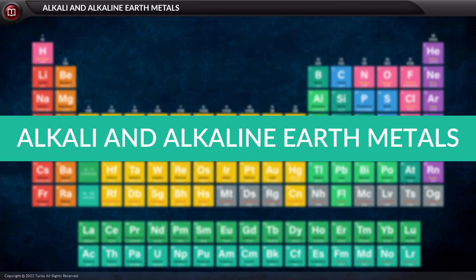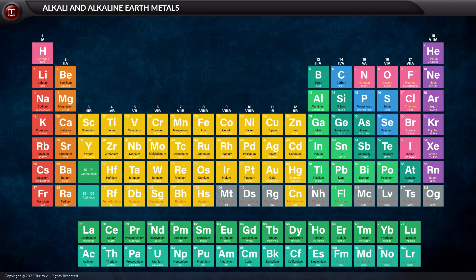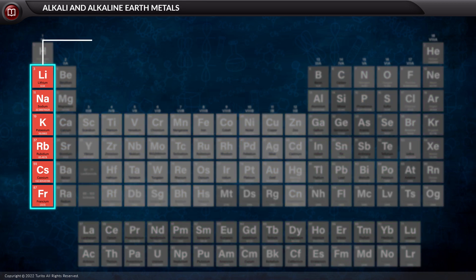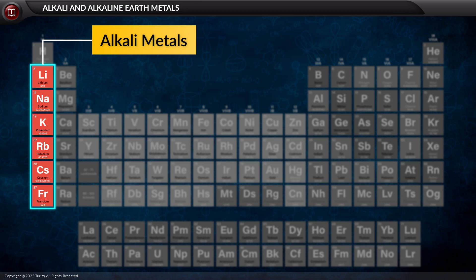Let us speak about alkali and alkaline earth metals. Firstly, where in the periodic table are the alkali located? Well, the first group of the periodic table, or group one, has alkali metals. Thus the alkali metals are lithium, sodium, potassium, rubidium, cesium, and francium.